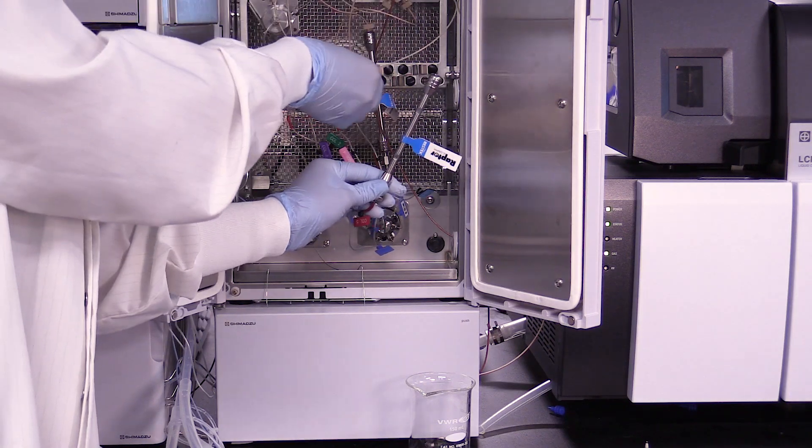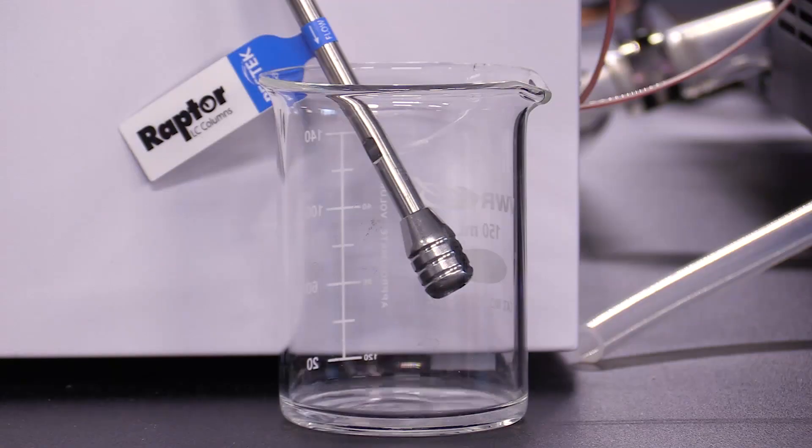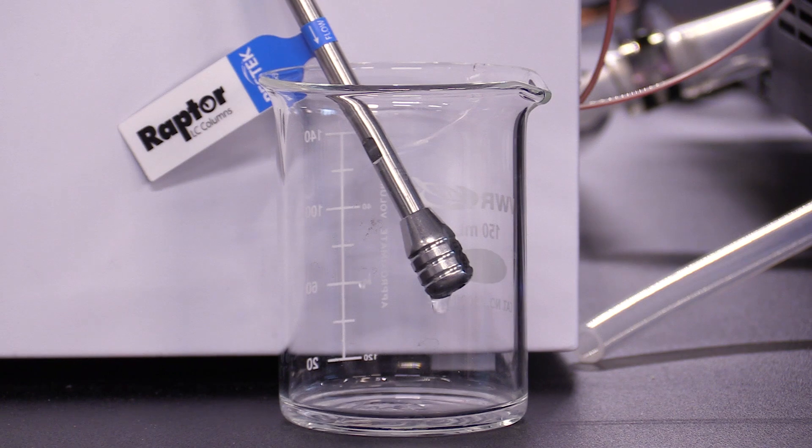Lastly, column fouling due to the buildup of particulates from the sample matrix can cause changes in retention times and increase back pressure. Column flushing or simply changing the column can solve the problem. Check with the column manufacturer to find suitable wash solvent for your column.